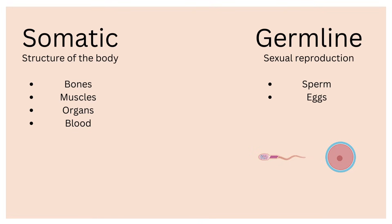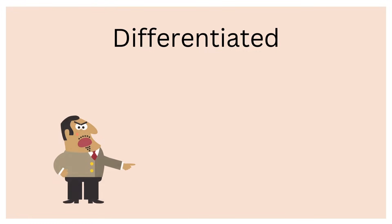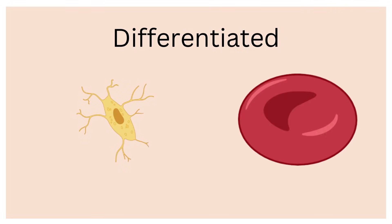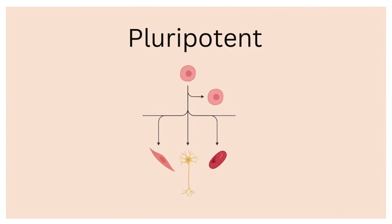Some other examples of somatic cells would be bone cells, muscle cells, nerve, and blood cells. These cells are differentiated, meaning they have undergone changes that give them their assigned role. This is why a bone cell looks and acts completely different than a red blood cell. Germ cells, on the other hand, are known as pluripotent, meaning they can still become any other type of cell in the body.